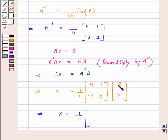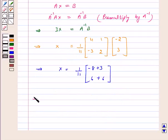4 into minus 2, this is minus 8 plus 3, and minus 3 into minus 2, 6 plus 6. This implies our X, Y is equal to 1 by 11, minus 5 and 12.